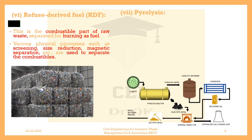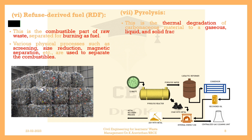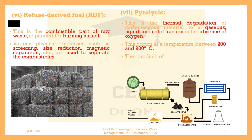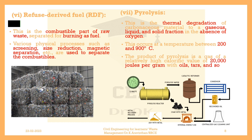Pyrolysis. This is the thermal degradation of carbonaceous material to a gaseous, liquid, and solid fraction in the absence of oxygen. This occurs at a temperature between 200 and 900 degrees Celsius. The product of pyrolysis is a gas of a relatively high calorific value of 20,000 joules per gram, with oils, tars, and solid burned residue.